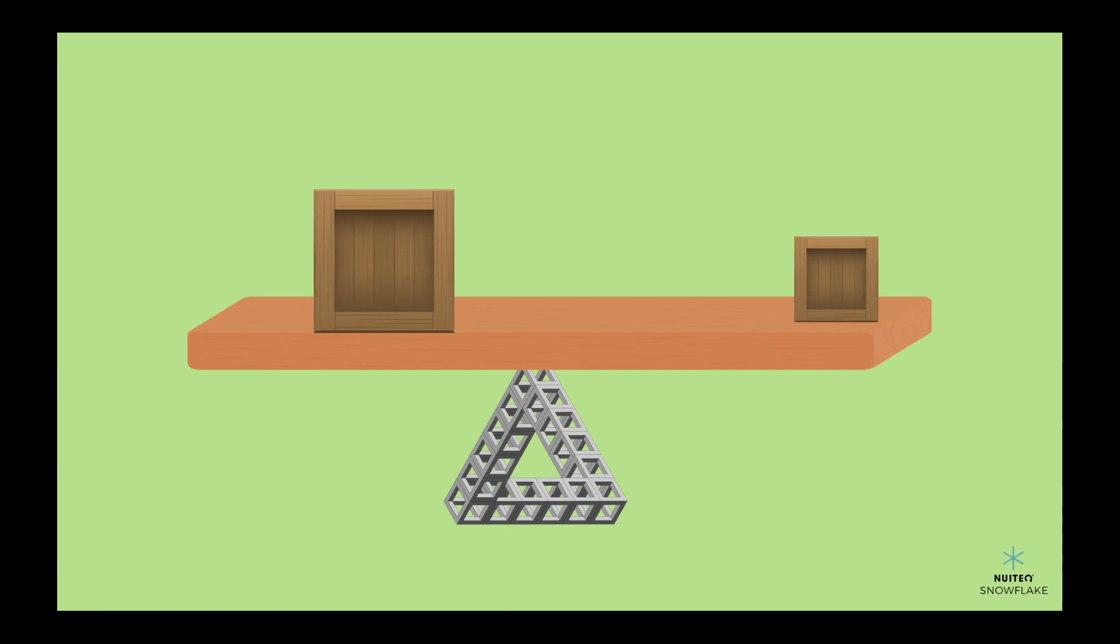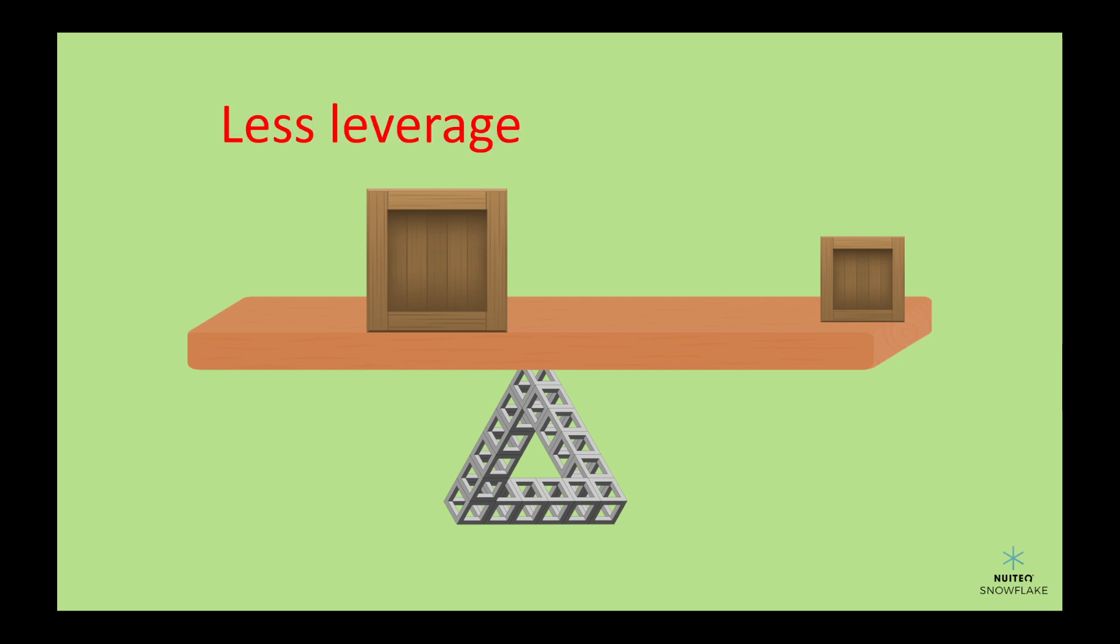But if you move the heavy object closer to the fulcrum and the lighter object farther away, the seesaw will balance out. This is because the heavier object has less leverage when it's closer to the fulcrum, so it doesn't have as much pulling power. And the lighter object has more leverage when it's farther away from the fulcrum, so it can balance out the heavier object.